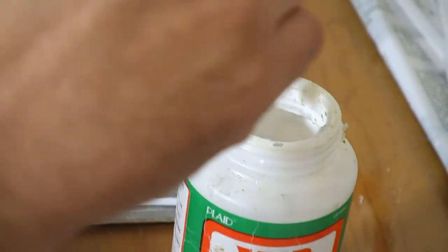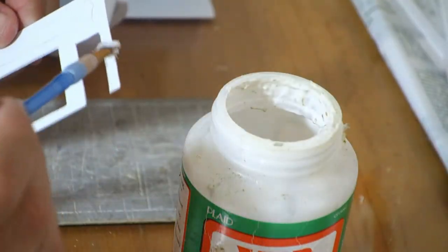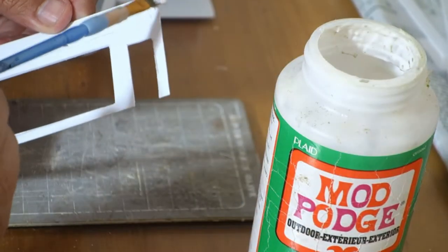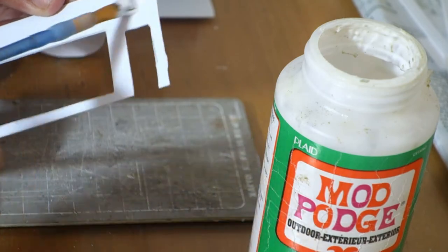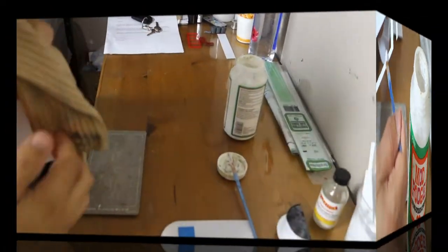We're going to spread Mod Podge over the front and sides where it's required, and then we'll go back and take the heavy nap sock and pat the texture consistent throughout all the way around the building.